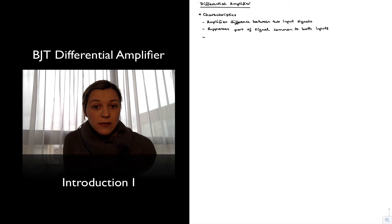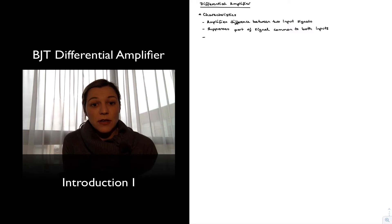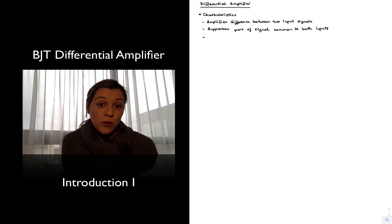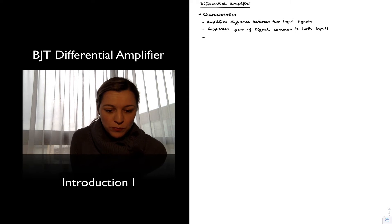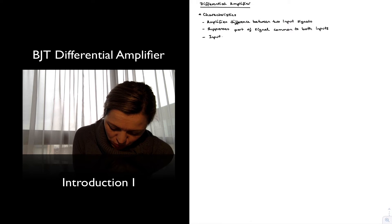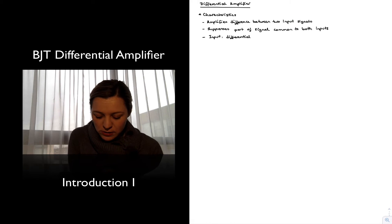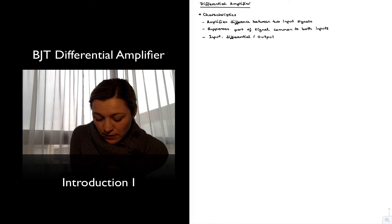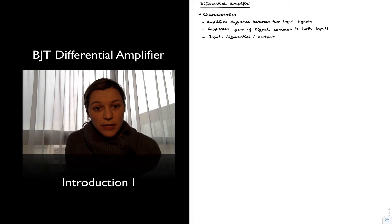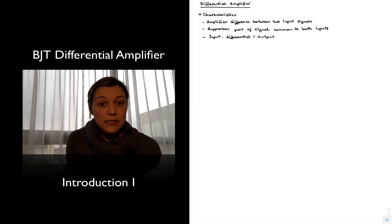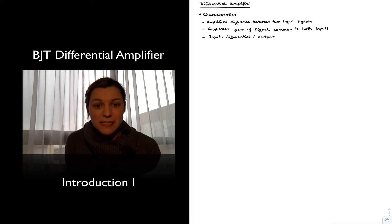Another characteristic, which is different from the types of amplifiers we have seen so far, is that instead of having a single input, it has two inputs — or we also refer to it as having a differential input. So the input is differential, with two input terminals. And the output can actually be either differential or single-ended: you may have two output terminals where the output signal is the differential voltage across those two terminals, or you may have a single terminal, which is referred to as a single-ended output.